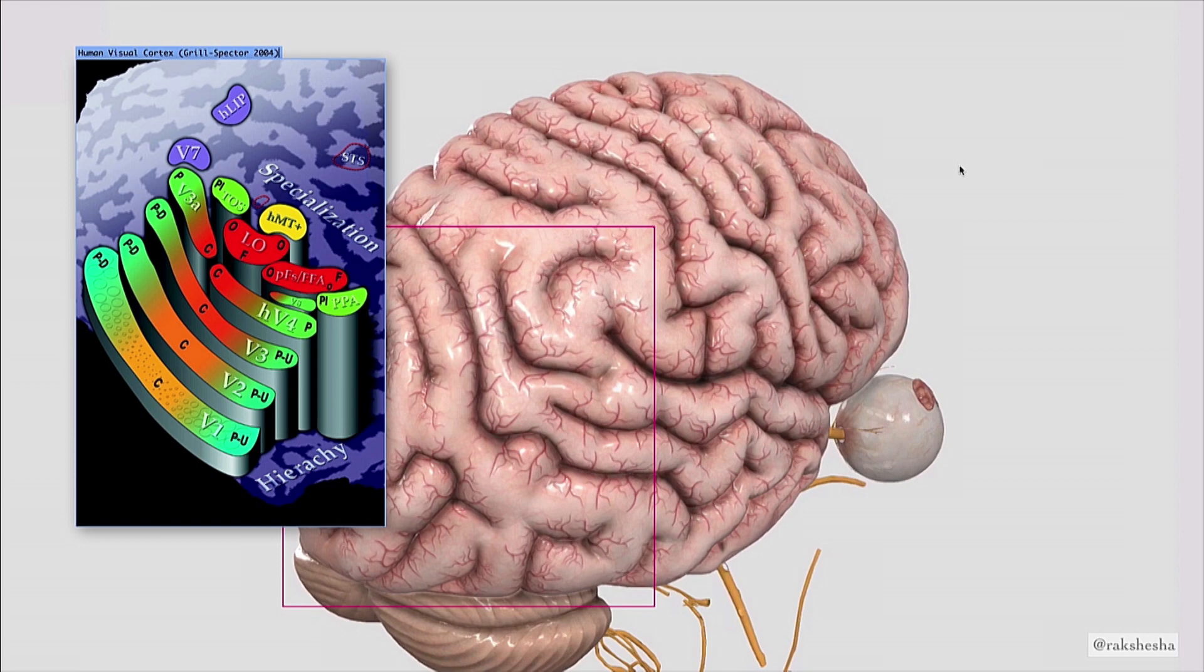Early layers extract simple features, like lines and curves and edges. And then later layers extract more complex ones, like gradients and surfaces and objects, eyes, faces, and movement. It's no accident that we see very similar behavior in Inception, because convolutional neural networks like Inception were inspired by the design of our visual cortex.